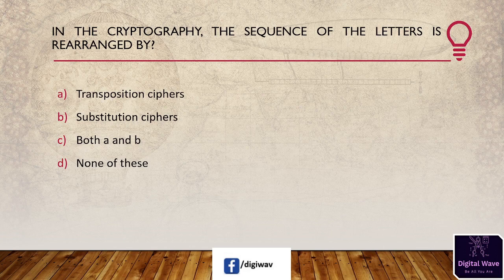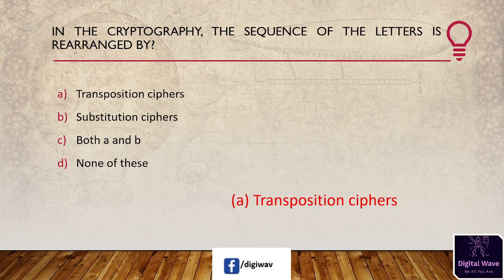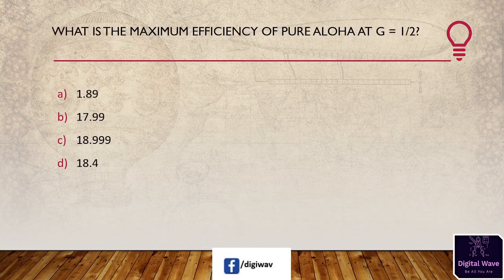Next question: in cryptography, the sequence of letters is rearranged by which cipher? Options are: transposition cipher, substitution cipher, both A and B, and none of these. The answer is transposition cipher — a predefined technique shuffles the sequence of letters in a plain text message in the transposition cipher.